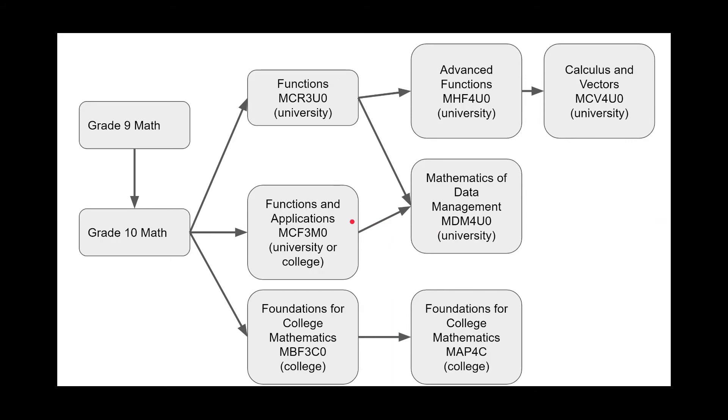What's the difference? MCF3MO is a mixed level class. There are fewer units in comparison to university functions. The benefit of that is that you can digest the material and take a little bit more time to understand what's happening. You can slow down as you're learning, and this is a great course for those of you who need a little bit of time to process your math and actually understand it before you're ready to move on to the next topic.